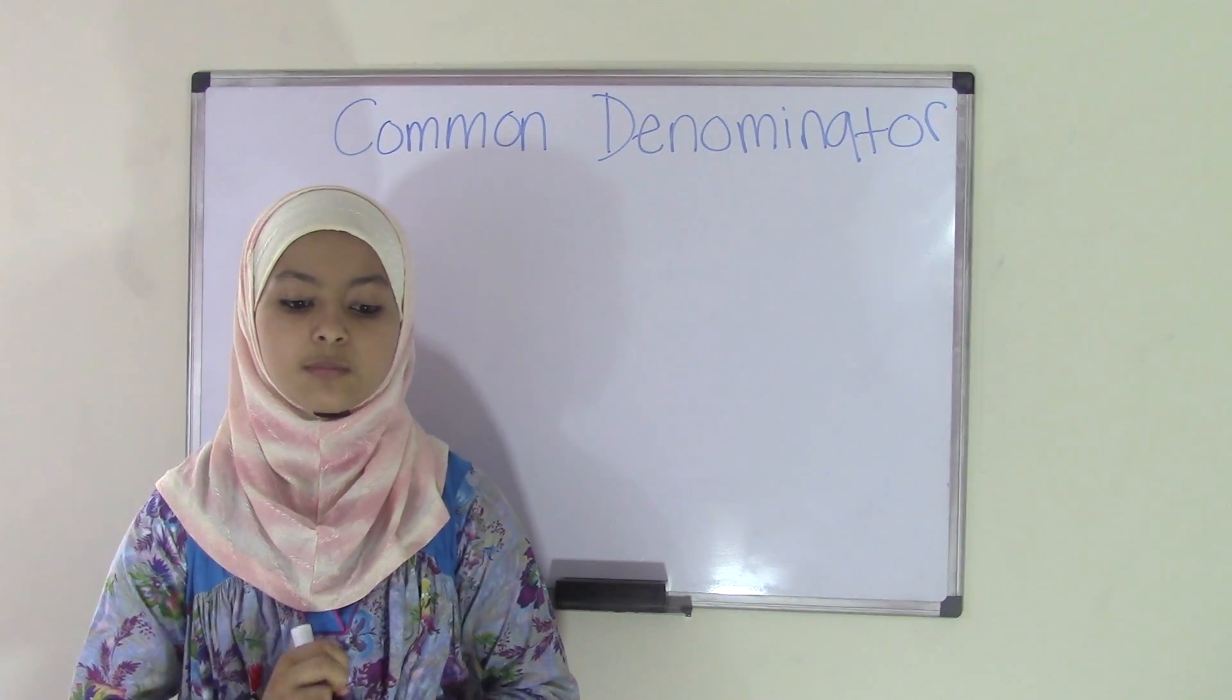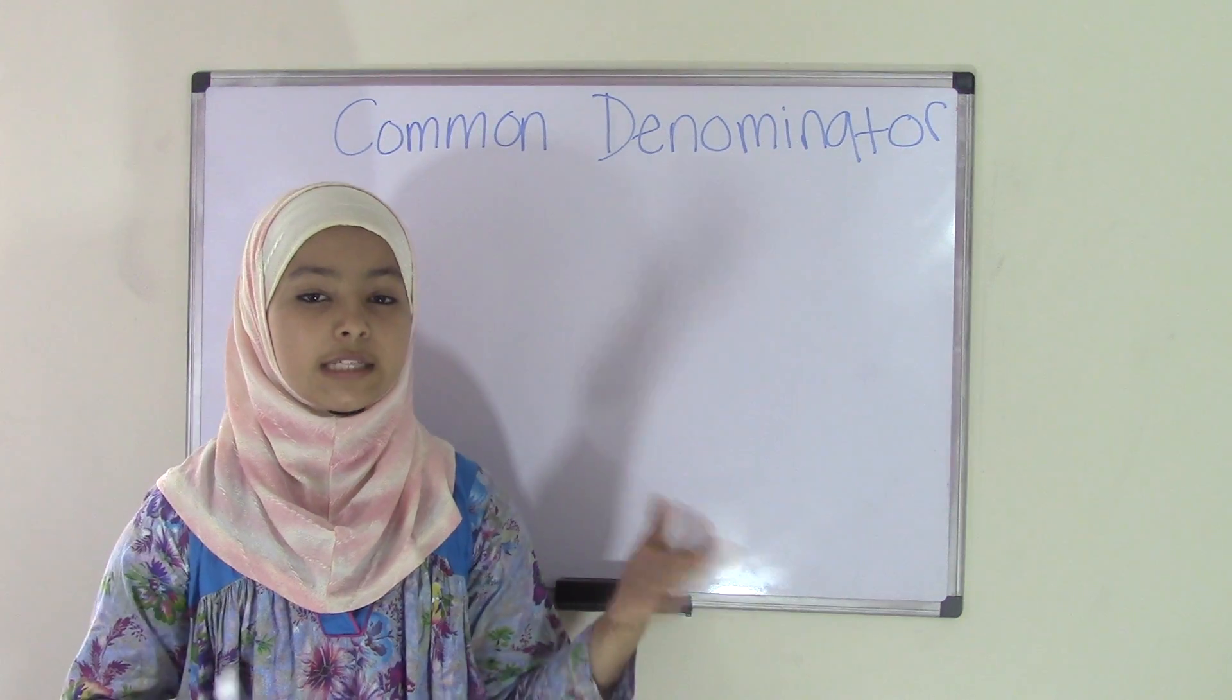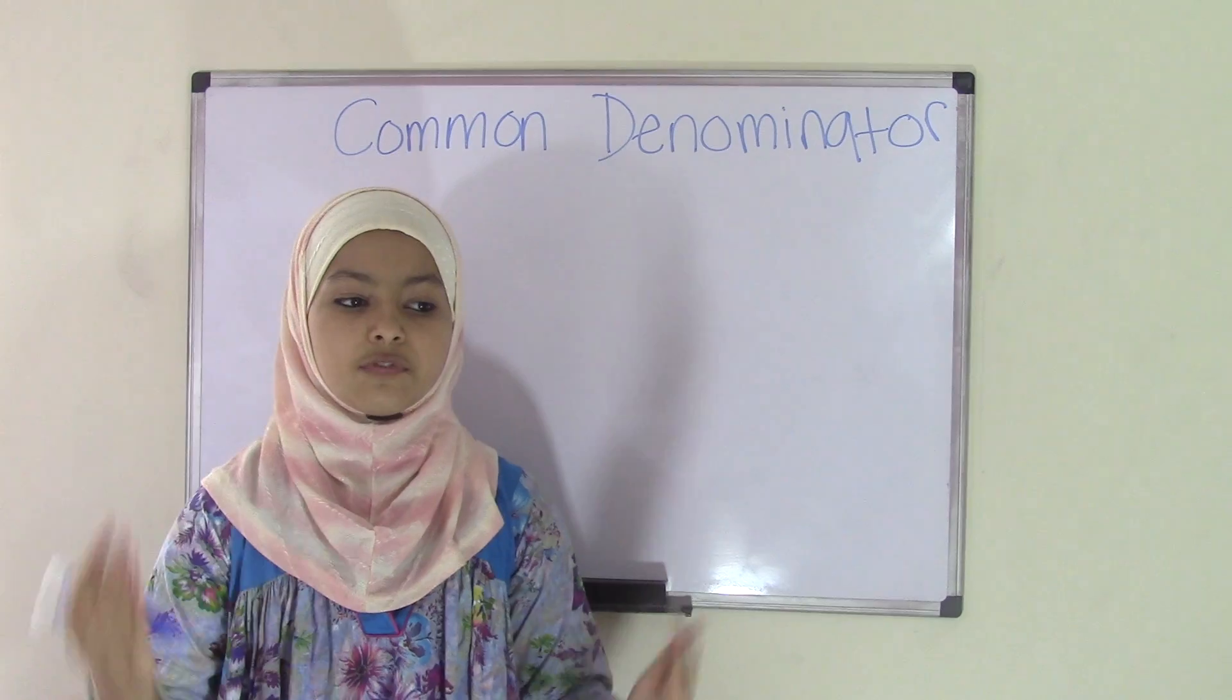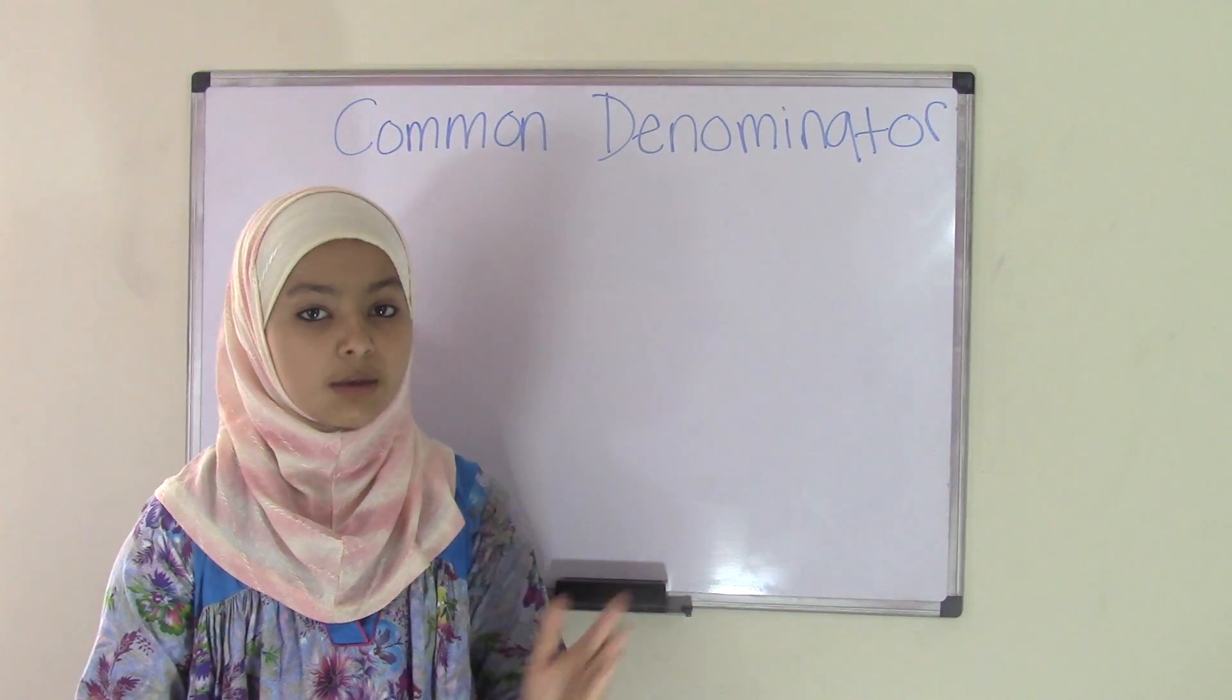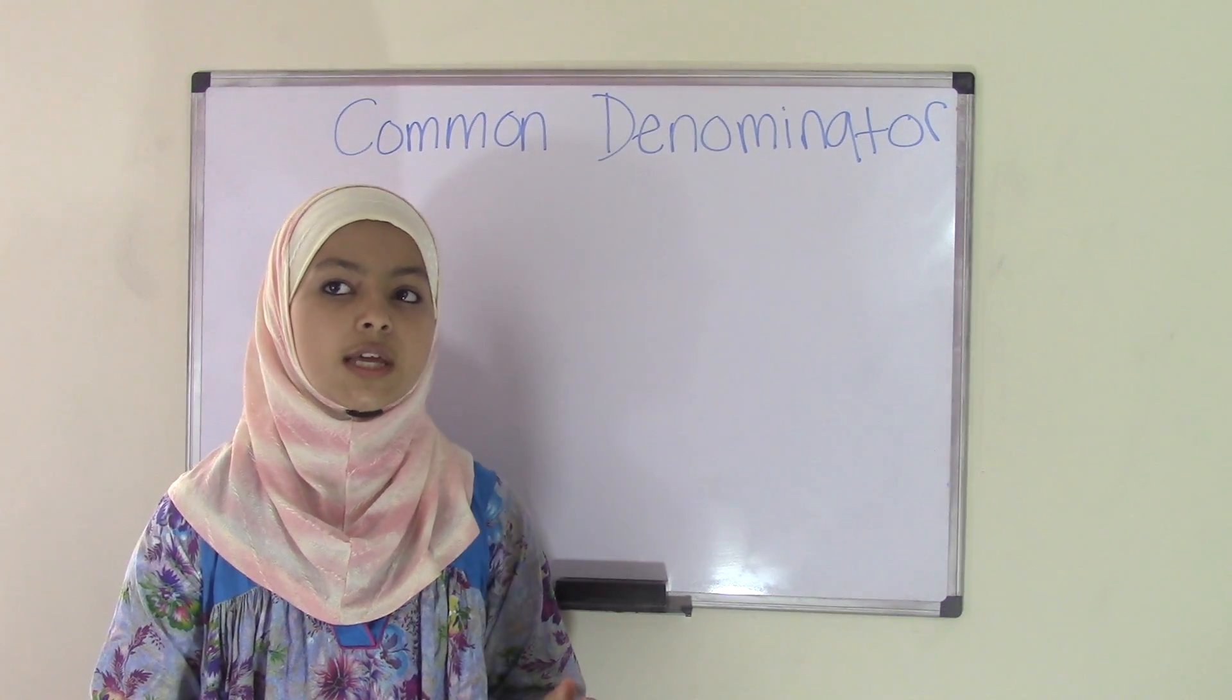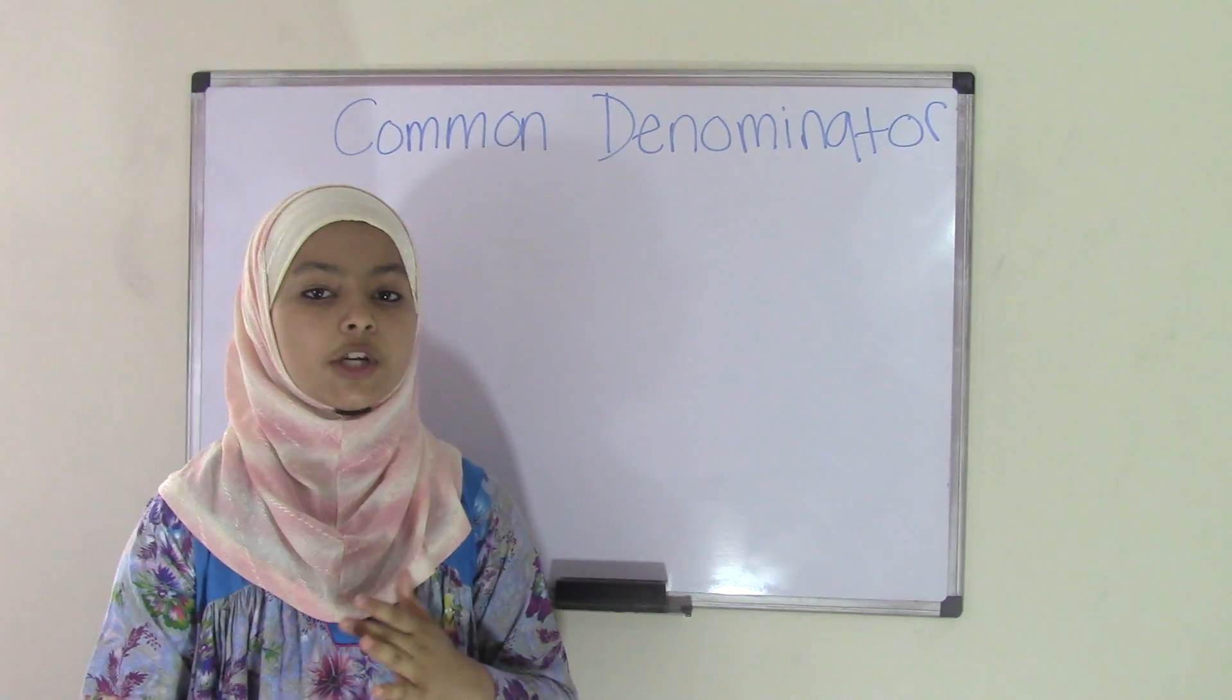Now if you've seen our previous video on common multiples, then you need to know that common multiples is the key factor to finding a common denominator. Why? Because when you're finding a common denominator, you take two different denominators and you have to find a common multiple so that you can add or subtract those two fractions. Remember, in addition and subtraction of fractions, the denominators need to be equal.